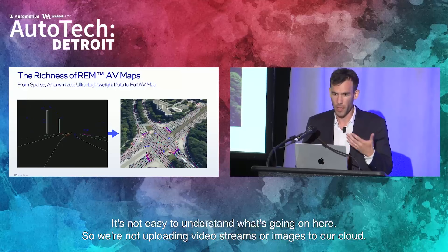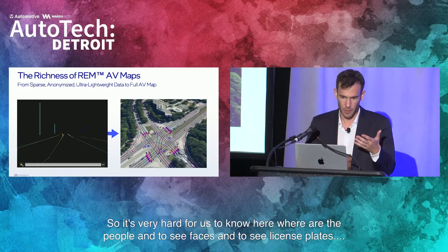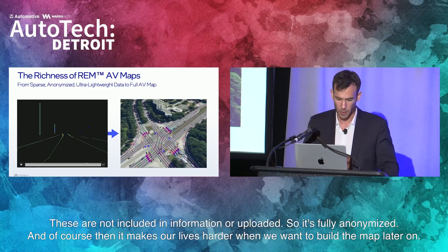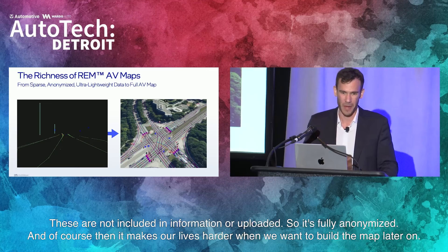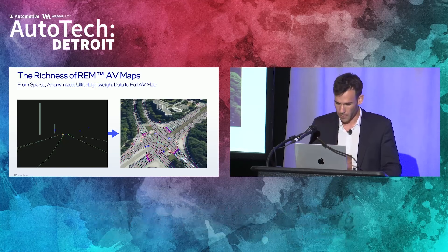We're not uploading video streams or images to our cloud. It is just the outputs of all our computer vision algorithms that run on the chip. So it's very hard to identify people or see license plates — these are not included in the information we're uploading. It's fully anonymized. Of course, that makes our lives harder when we want to build a map later on, because eventually we need to get to the outcome on the right side, which is a very precise, detailed map with all the features in high quality.